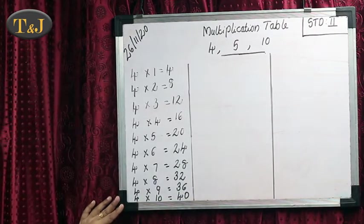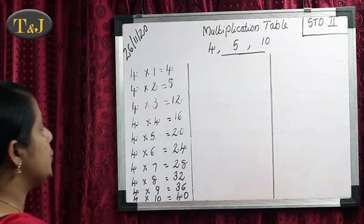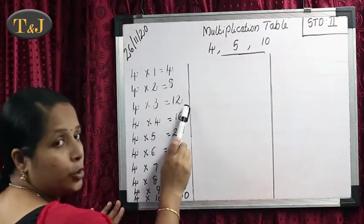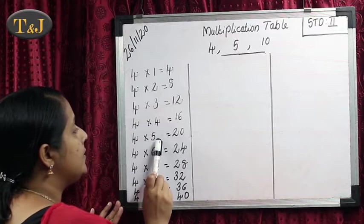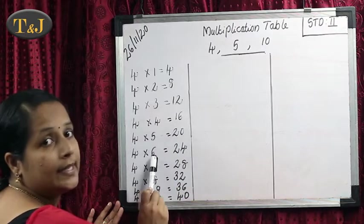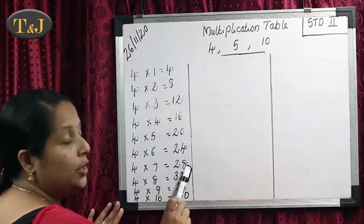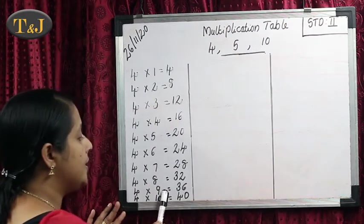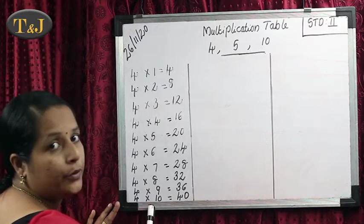Then this is our fourth multiplication table. All of you repeat with me. 4 times 1 is 4, 4 times 2 is 8, 4 times 3 is 12, 4 times 4 is 16, 4 times 5 is 20, 4 times 6 is 24, 4 times 7 is 28, 4 times 8 is 32, 4 times 9 is 36, 4 times 10 is 14.